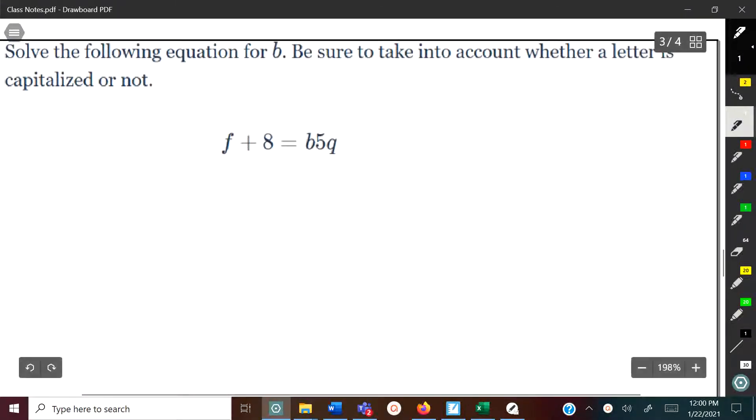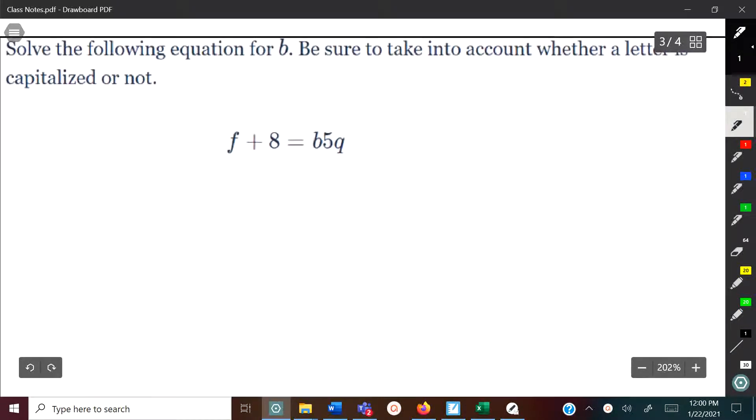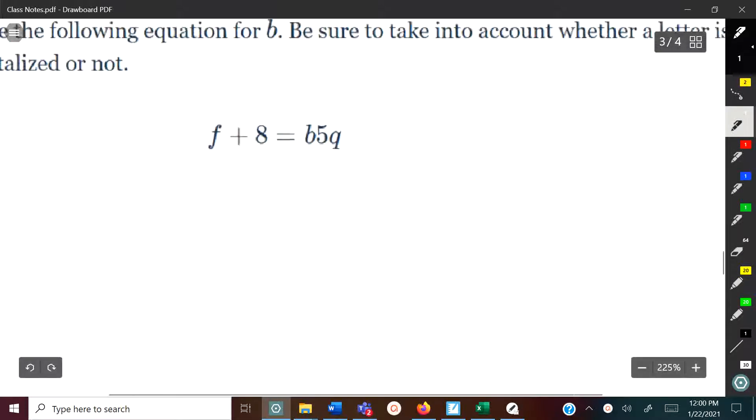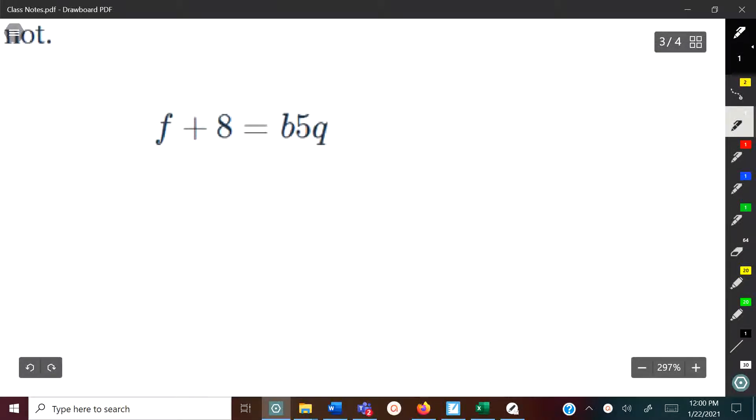Here on this first example, it says to solve the following equation for b and be sure to take into account whether a letter is capitalized or not. So first we want to find that b right here, and we want to isolate b by itself by doing the opposite operation. Here we have the 5 and the q both being multiplied to b, so in order to isolate b we're going to do the opposite operation and divide by 5q.